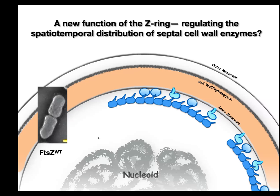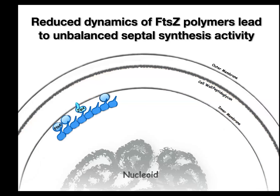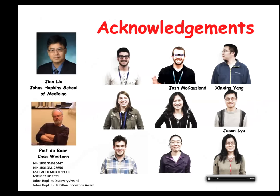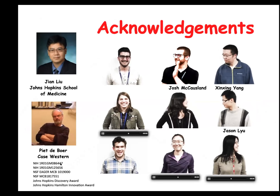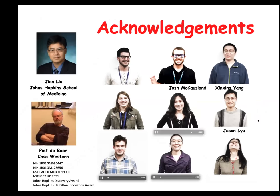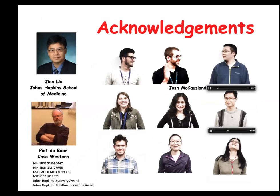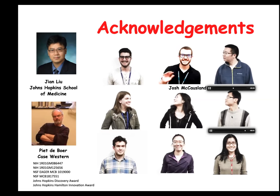But if you have a mutant where FTSZ doesn't move, every single enzyme stays in one place. Then you only get very concentrated synthesis on one side but nothing on the other side, and you end up with a highly asymmetric, abnormal cell formation. We think this is the major function of this treadmilling dynamics of FTSZ — and that is the whole goal of having this type of linear motor inside the cell. This work was done in collaboration with Jens and Pete, together with Josh, Xinxin, and Jason, who drove this project forward. Thank you for attending the seminar, and I'd love to take any questions.